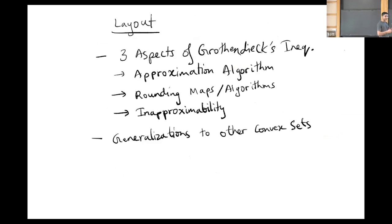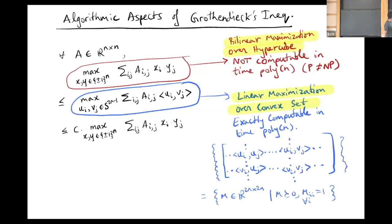In this talk, I want to highlight three aspects of Grothendieck's inequality and mention some still open questions. I'll start by talking about an algorithmic interpretation of Grothendieck's inequality, then I'll talk about rounding maps, which are the most commonly used tool for proving such an inequality. And finally, we'll discuss approximability aspects and conclude with generalizations to bilinear maximization over other convex sets.